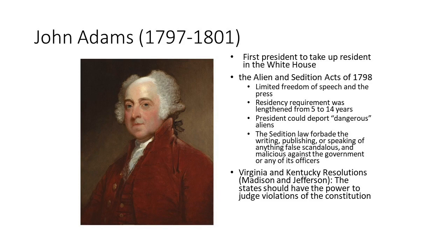Adams wins. But because of the weird nature of the electoral system in this era, the person that got second place would be vice president — they didn't run as a pair yet; that will come later after we amend the Constitution. Thomas Jefferson gets second place and therefore he is the vice president. Adams and Jefferson in this time period really didn't get along very well at all.